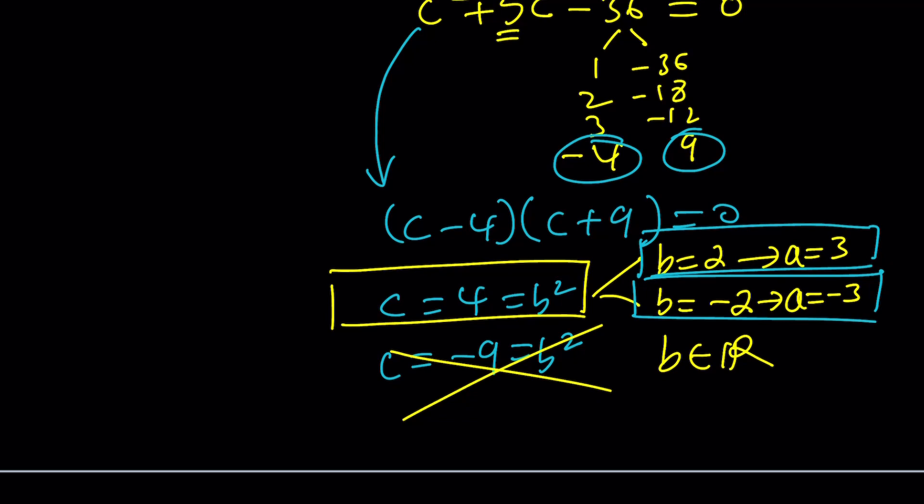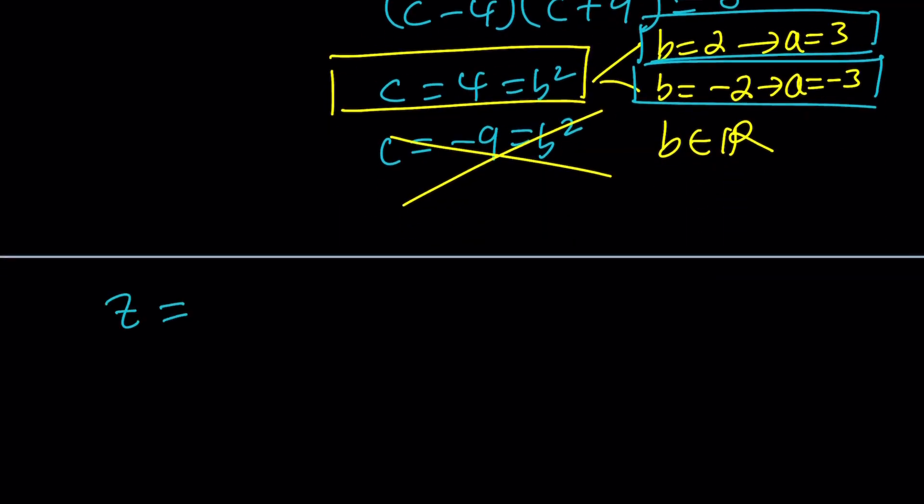Because remember, our equation, the solution to our equation z was written as a plus bi. So if a is 3, b is 2, then z is going to be 3 plus 2i. Let's call that z sub 1. And z sub 2 is going to be negative 3 minus 2i. Again, if z is a solution, negative z is also a solution. Because when you square both of these numbers, you get the same thing. So that's one way to solve this quadratic equation.